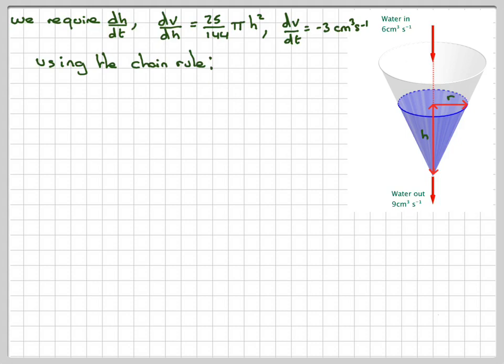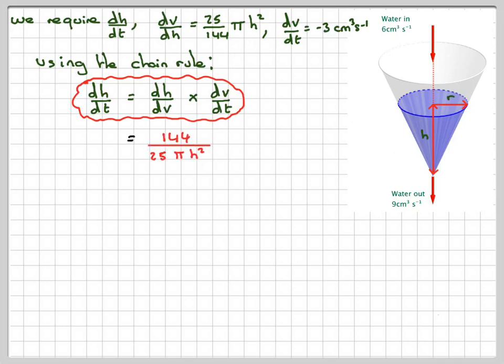Using the chain rule, we can say that dh/dt—you have to be careful here, we're going to want to invert this one. So we need dh/dV times dV/dt. This is going to be 144/(25πh²) times -3. So that gives me dh/dt = -432/(25πh²). So here is my differential equation for part a.